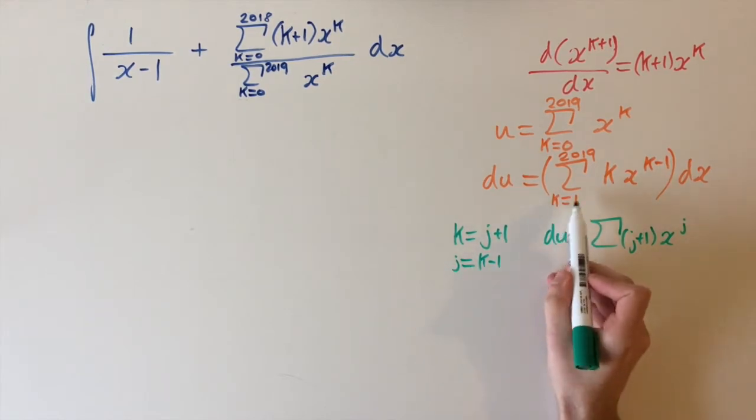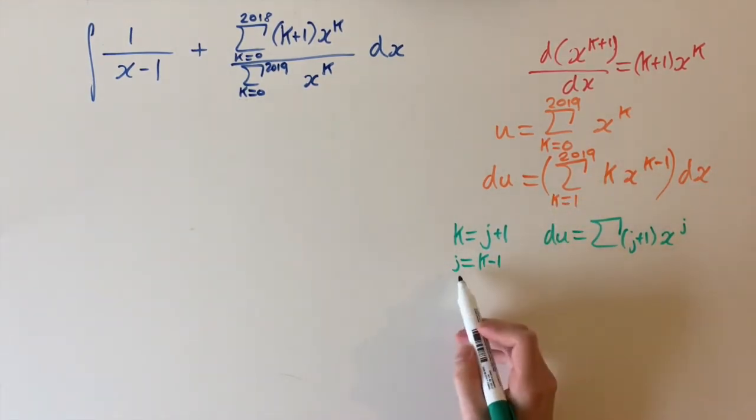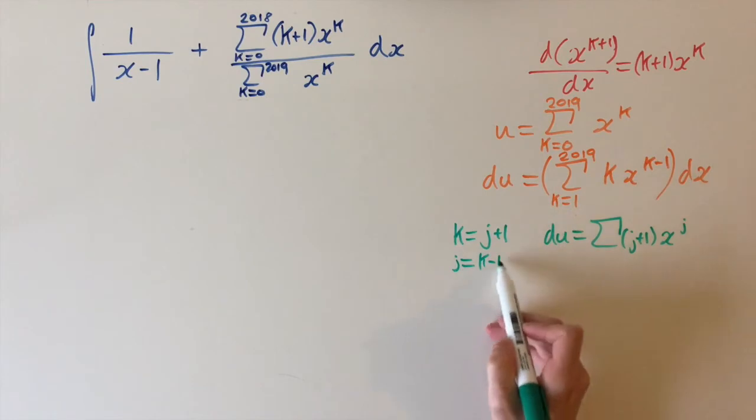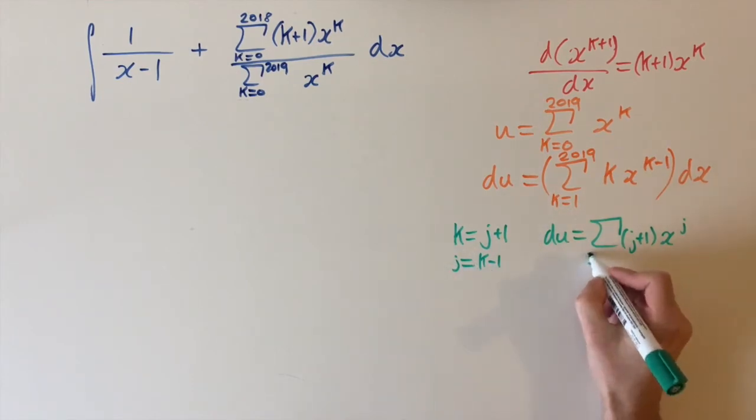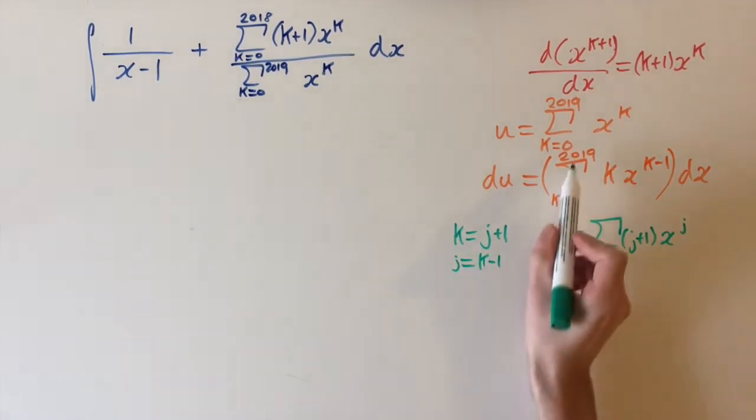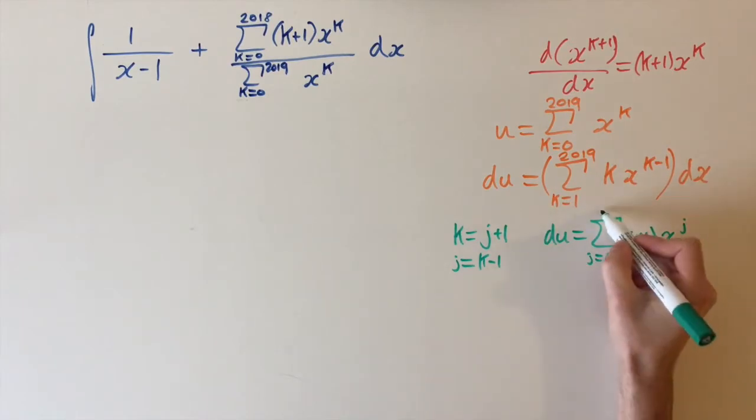So if we put k equals 1 into this equation, we get j equals 0. And if we put k equals 2019, we get j equals 2018.